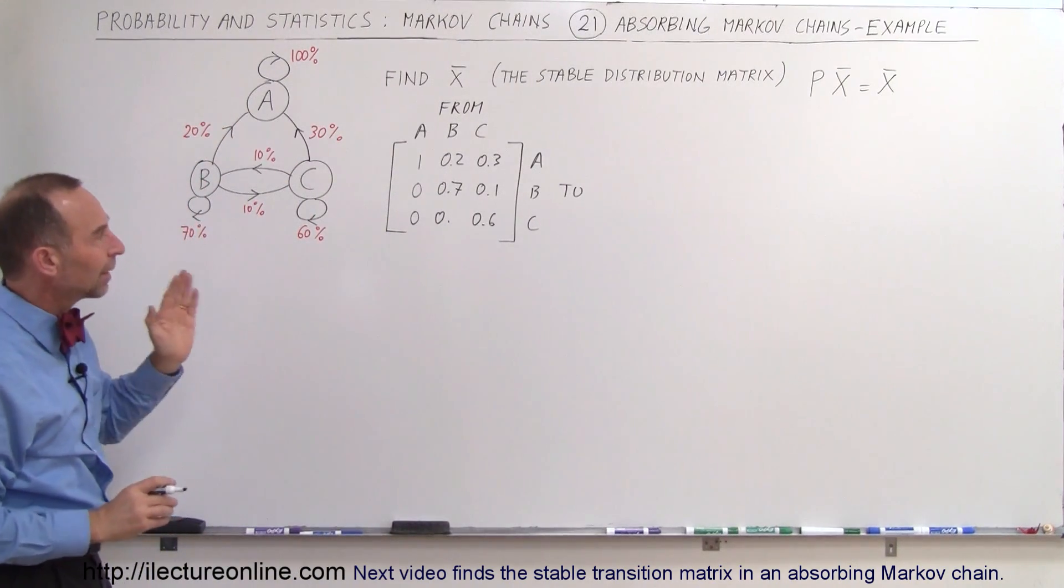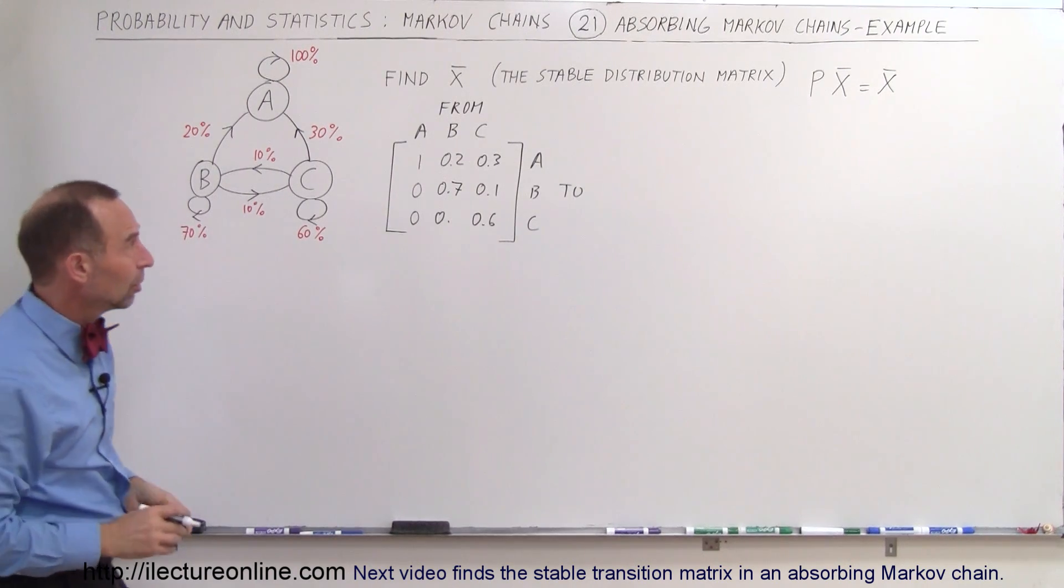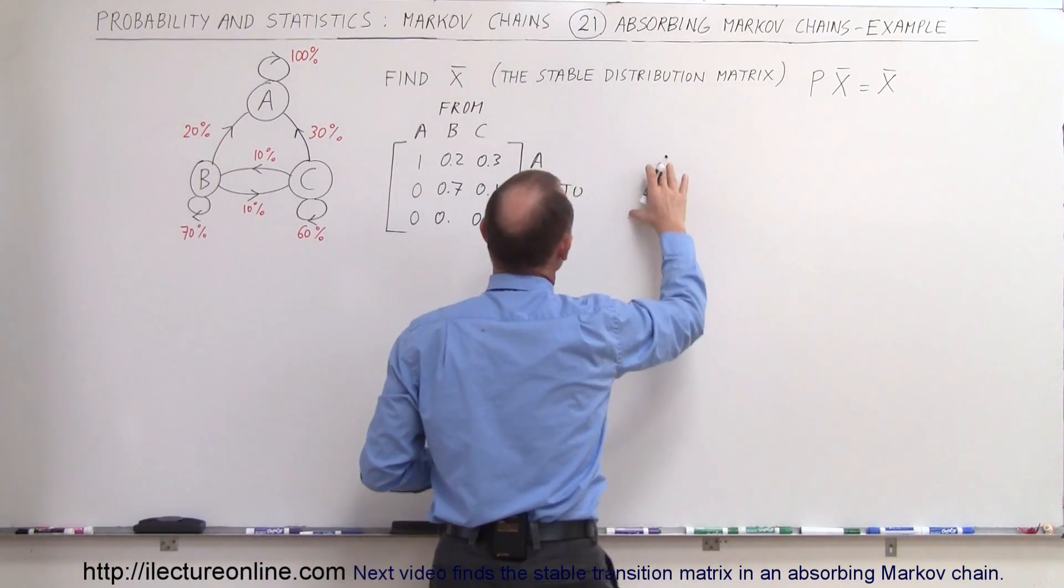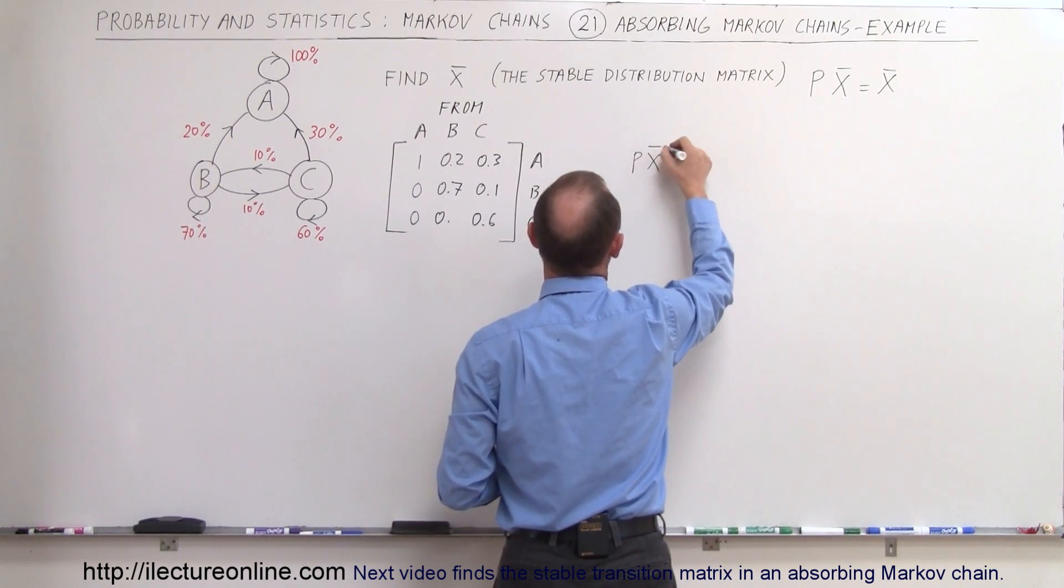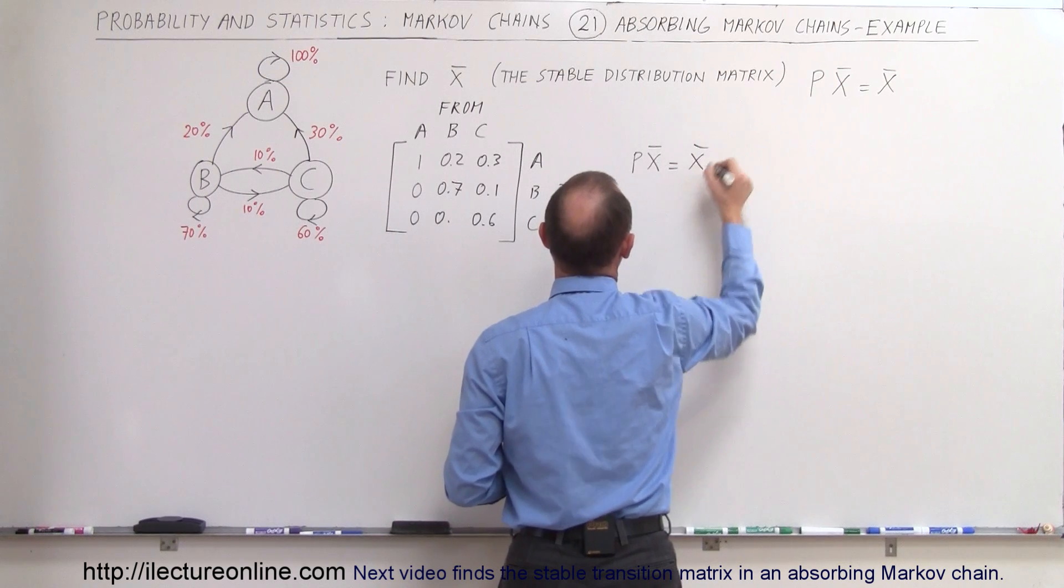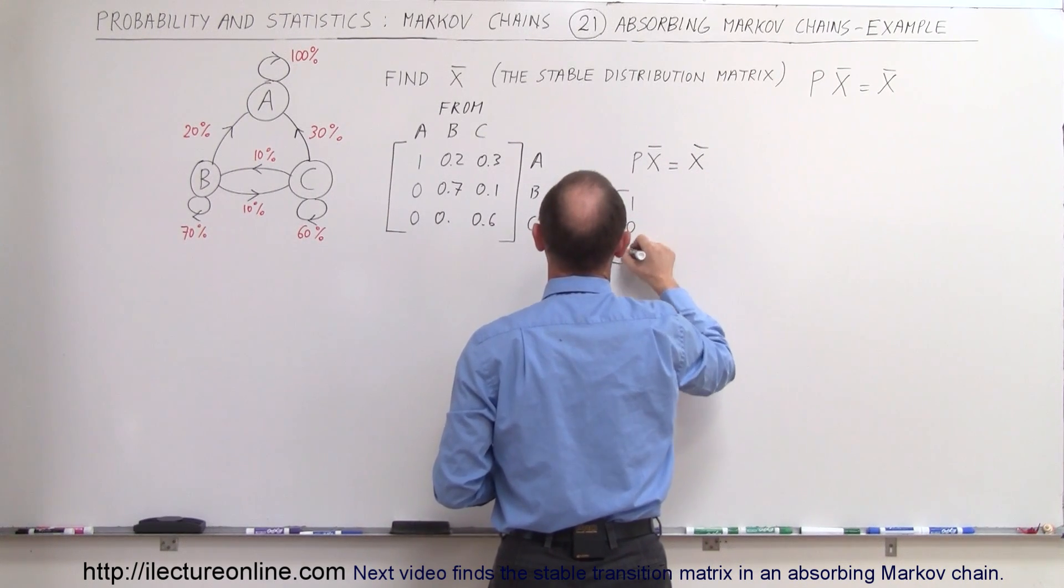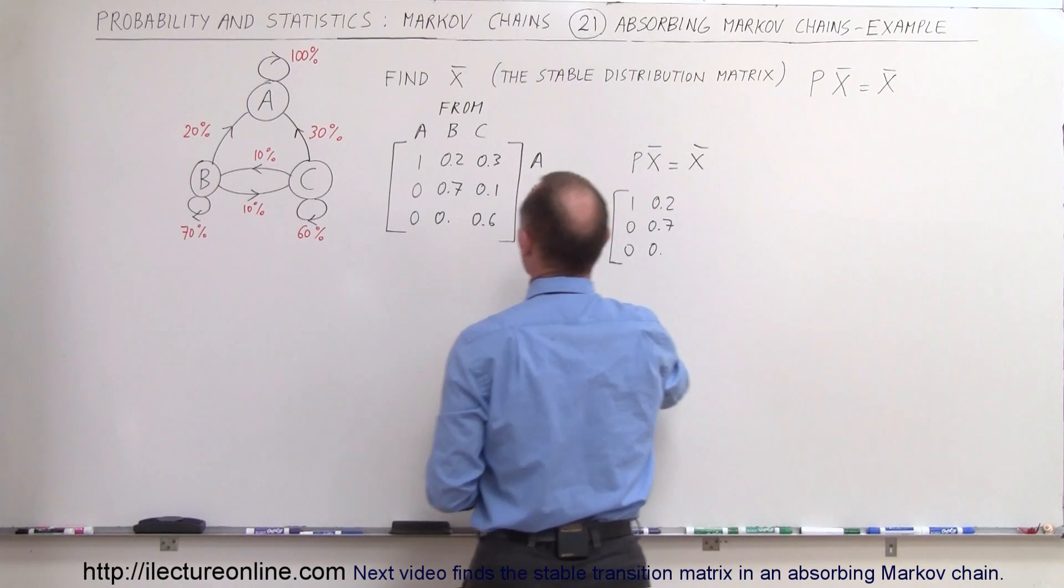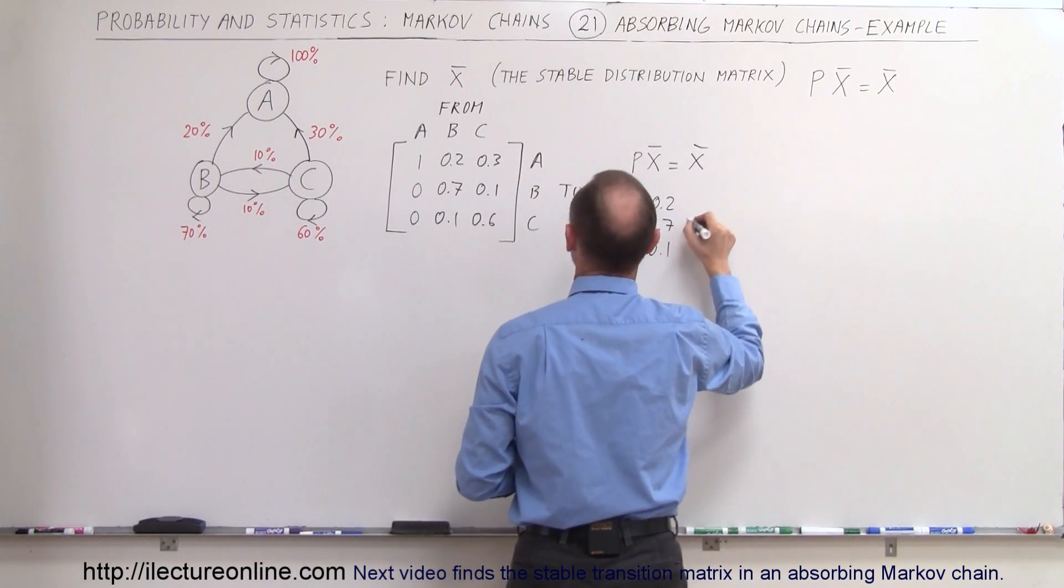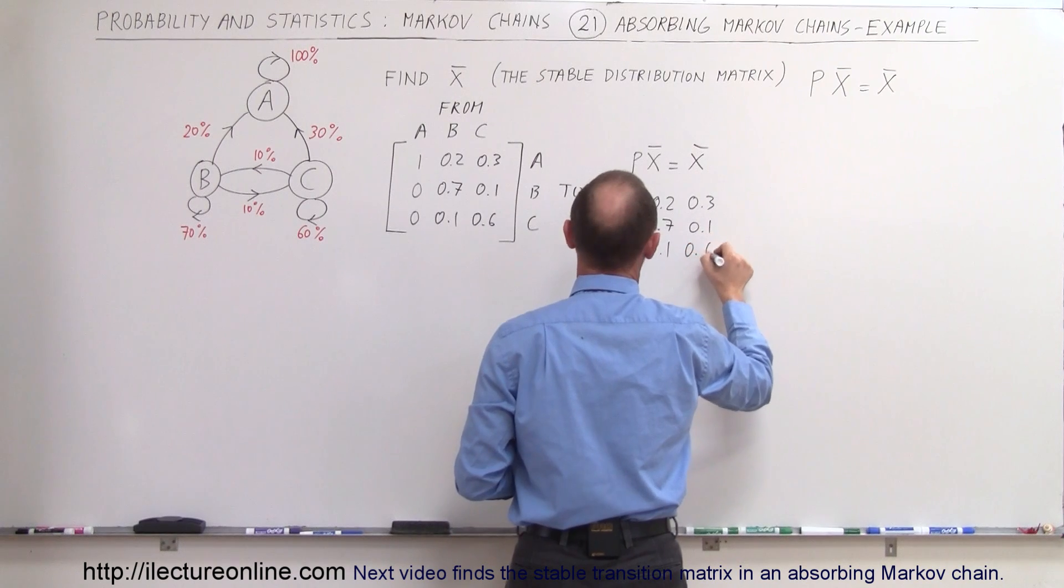So now we're going to multiply that matrix times our presumed stable distribution matrix. P times X stable equals X stable. So when we take our matrix we have 1, 0, 0, 0.2, 0.7, 0.1, 0.3, 0.1, 0.6.